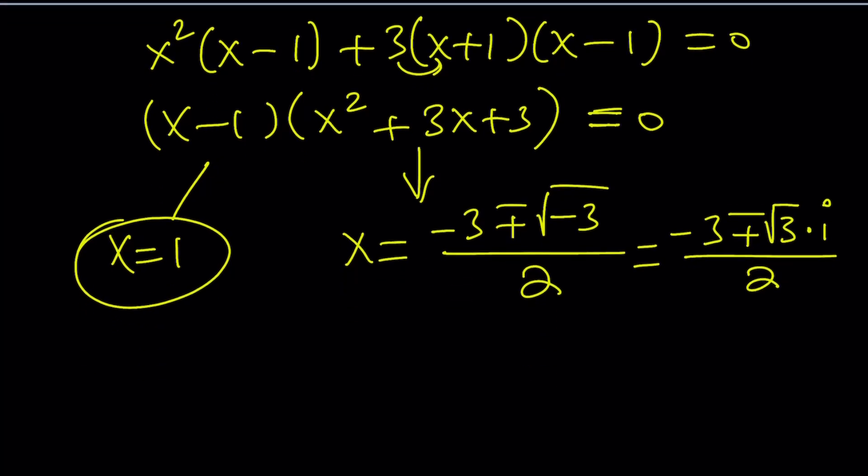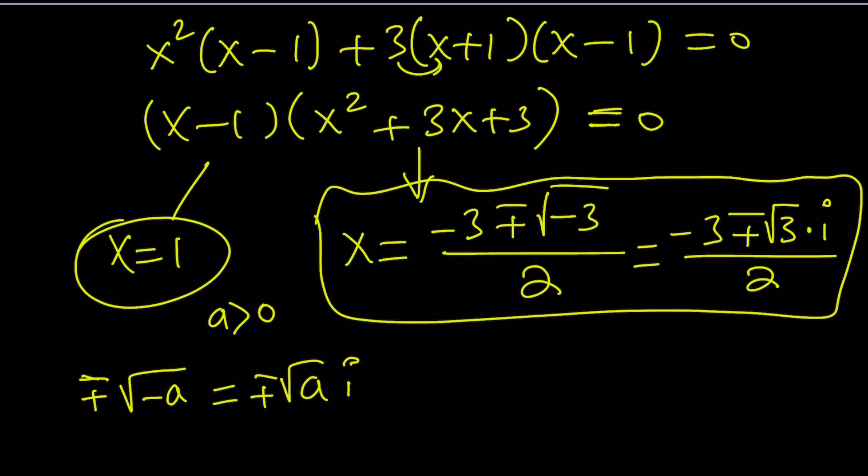So the solutions are going to be negative 3 plus minus square root of 3 times i divided by 2. So basically, the way you write it is, if you have a number that is positive, let's say a, and is greater than 0, square root of negative a can be written as square root of a times i. But of course I'm going to write it with a plus minus because it could be either one of these. But the plus minus takes care of both cases. So now we've got our solutions, and the first method is done.